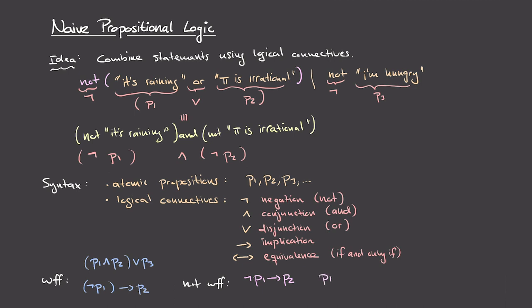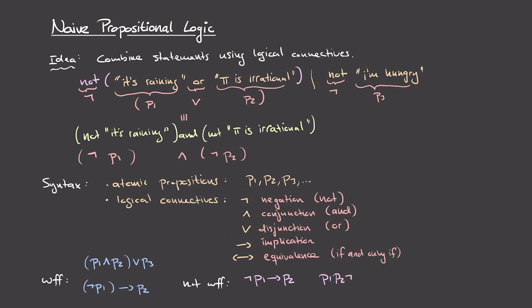Consider 'p1 p2' and then the negation symbol. This is not well-formed because we have two atomic propositions that aren't being combined using one of these logical connectives, and we have this negation operator which isn't being applied to anything at all. Similarly, it doesn't make sense to write things like 'p1 not p2' because negation is a unary operator — it only applies to a single proposition and therefore we can't use it to combine two separate propositions with one another.